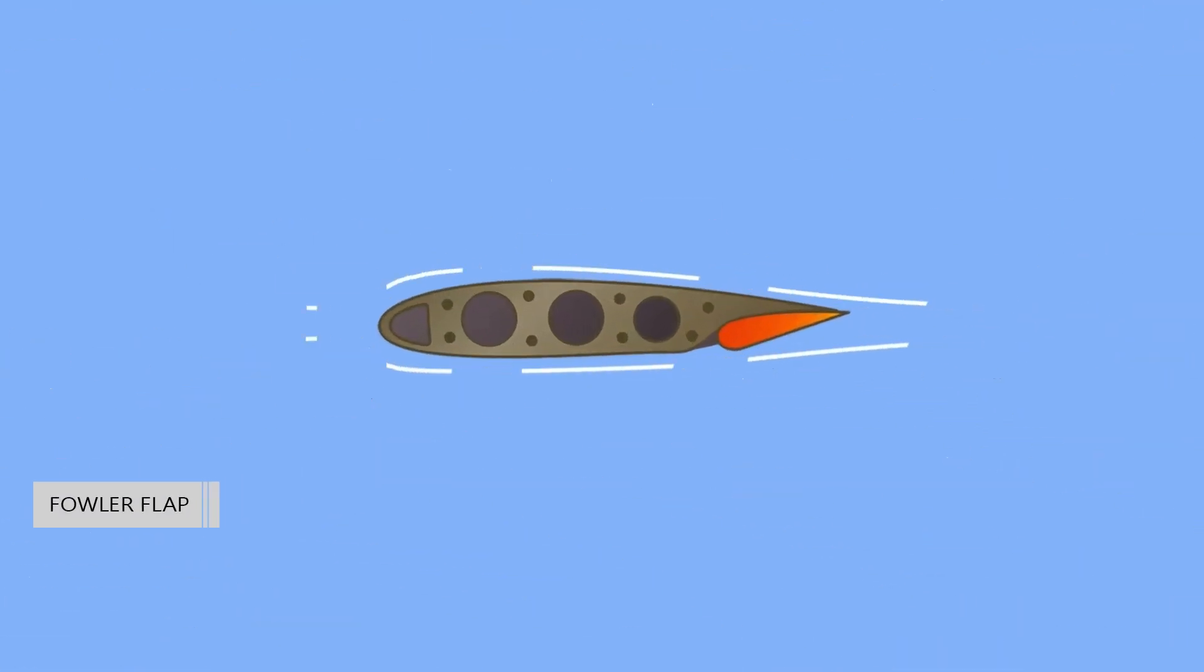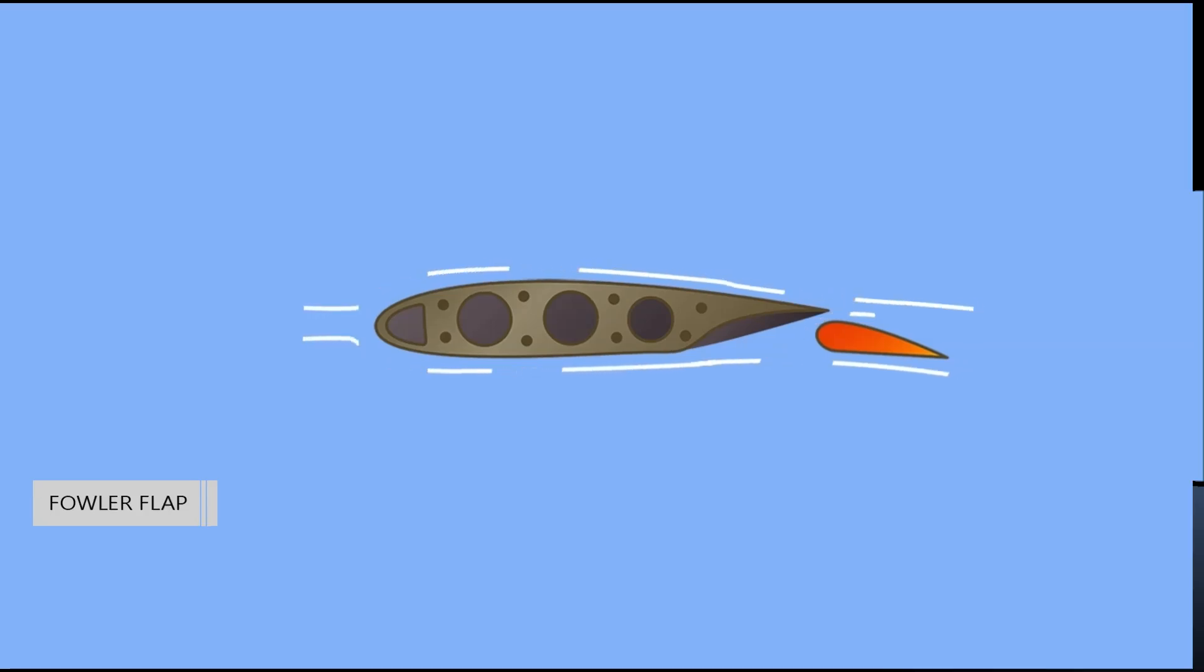Fowler flaps not only lower the trailing edge of the wing when deployed but also slide aft, effectively increasing the area of the wing. This creates more lift via the increased surface area as well as the wing camber. When stowed, the Fowler flap typically retracts up under the wing trailing edge similar to a split flap.